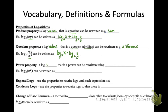The power property: a log value that is a power can be rewritten using multiplication. For example, log base 2 of x squared — we take the exponent and pull it out to the front of the expression, rewriting it as 2 times log base 2 of x. So the exponent has now become multiplication. Those are the three properties of logarithms.